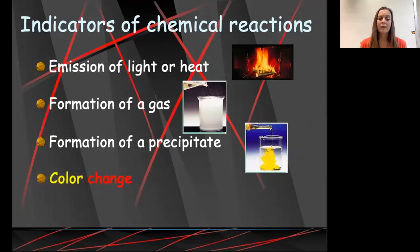We also talk about color change as an indicator of a chemical reaction. Very specifically, we talk about unexpected color change, meaning that it's not simply the product of mixing two colors and getting a third color, but of mixing two things or creating a reaction that generates a color.